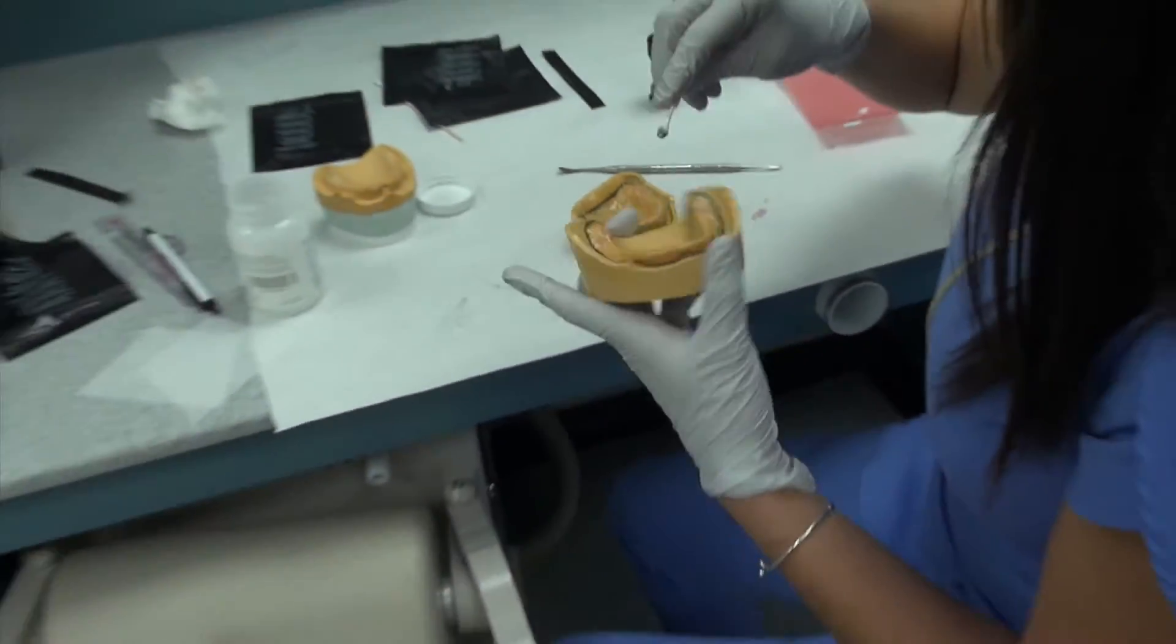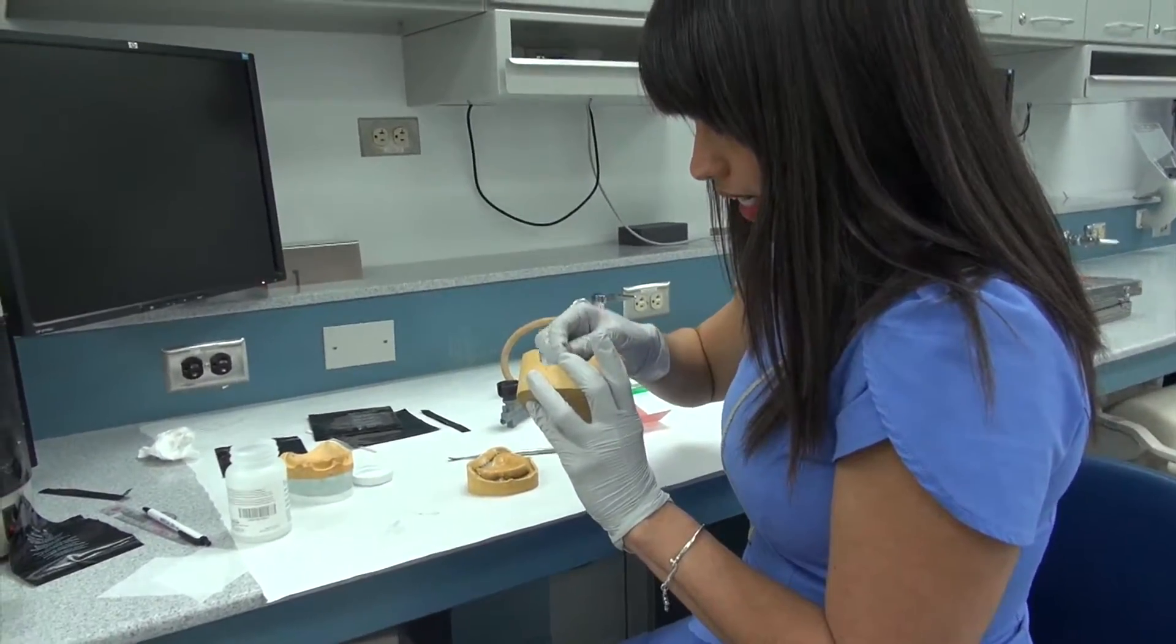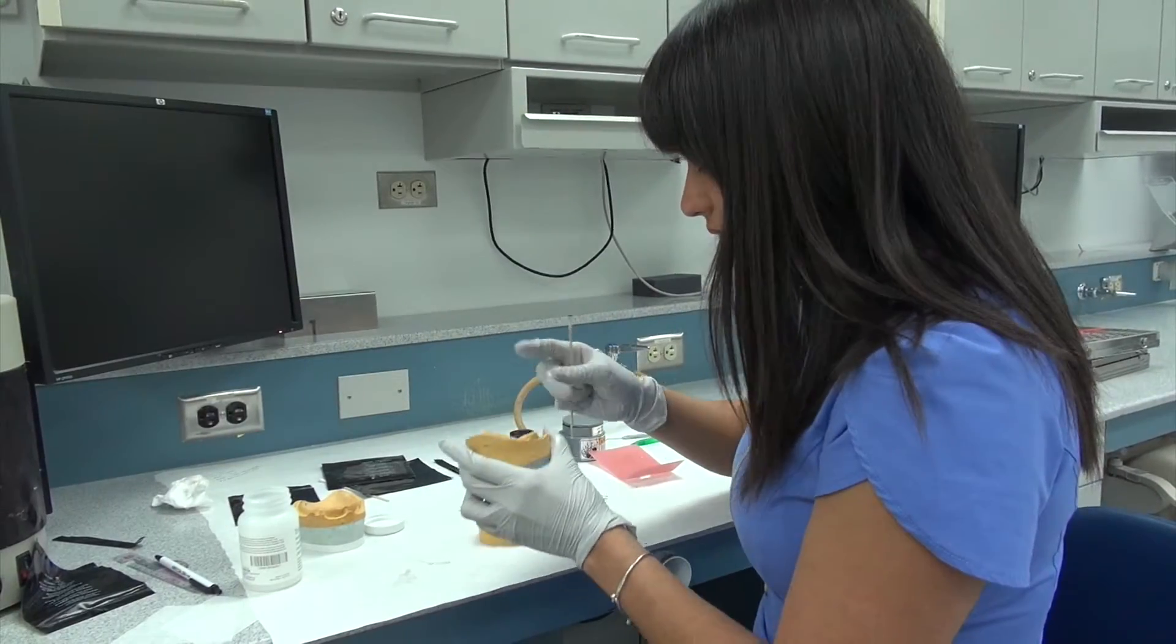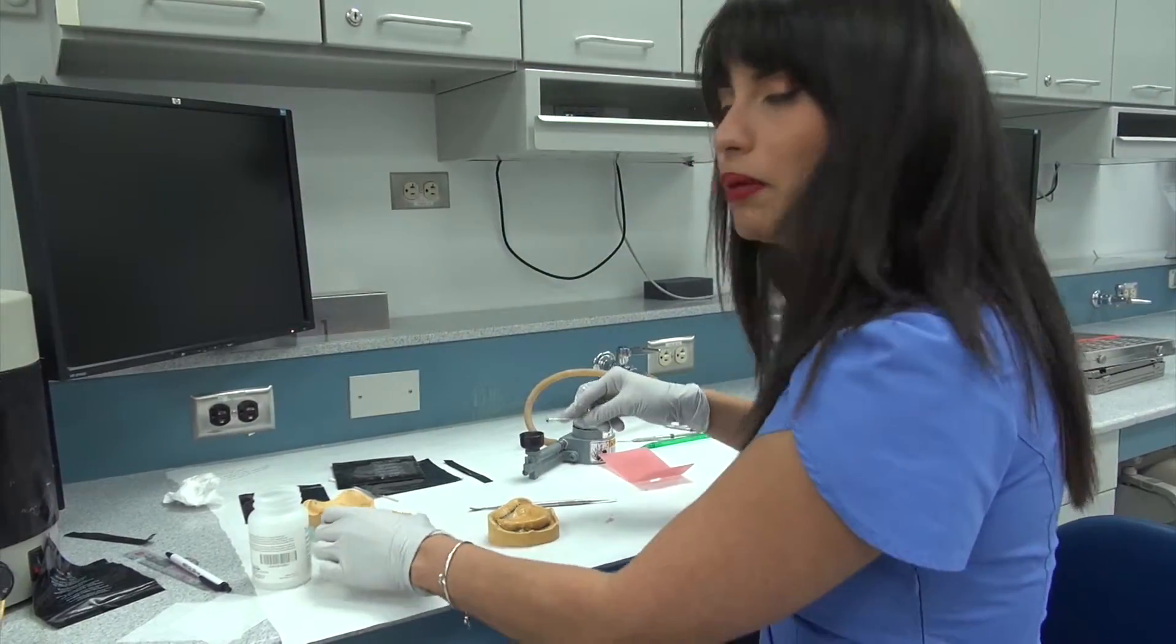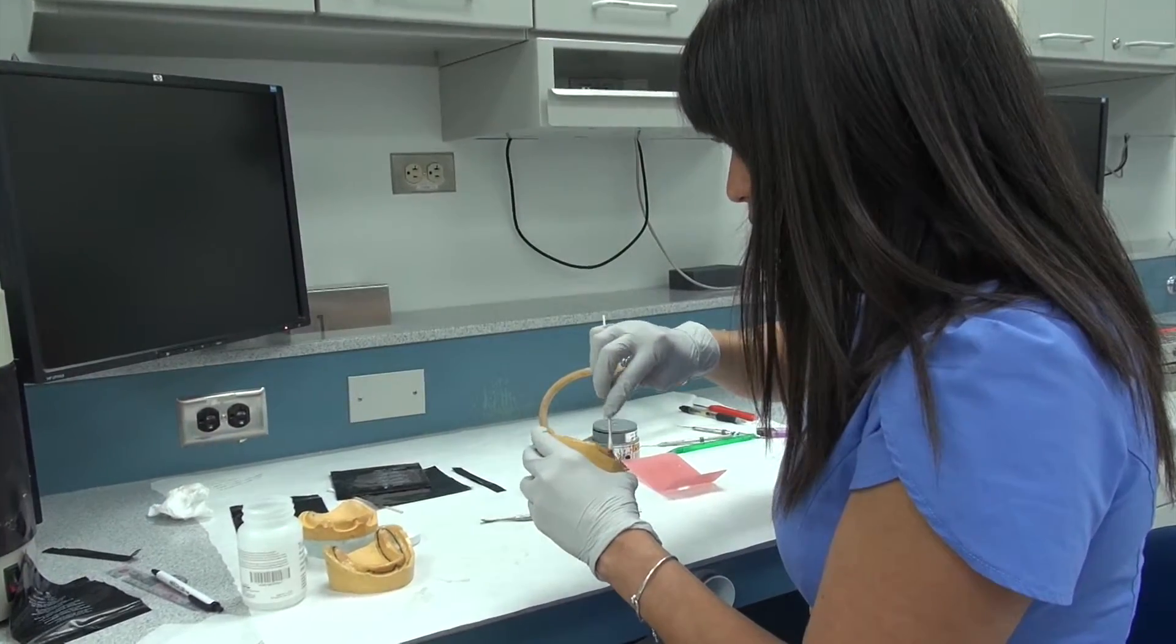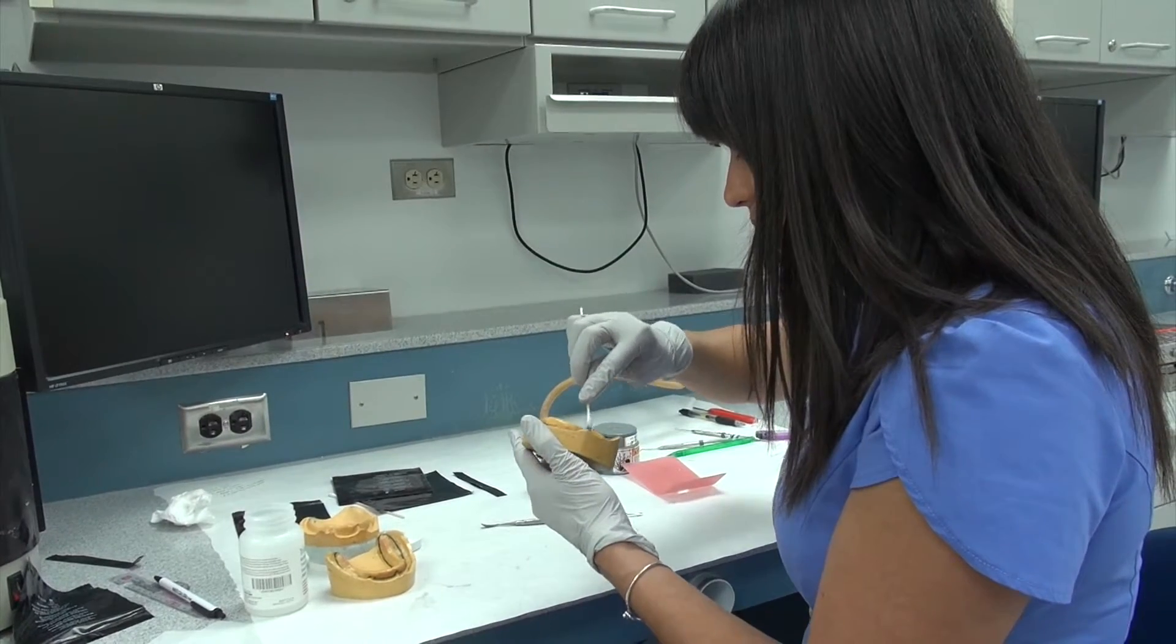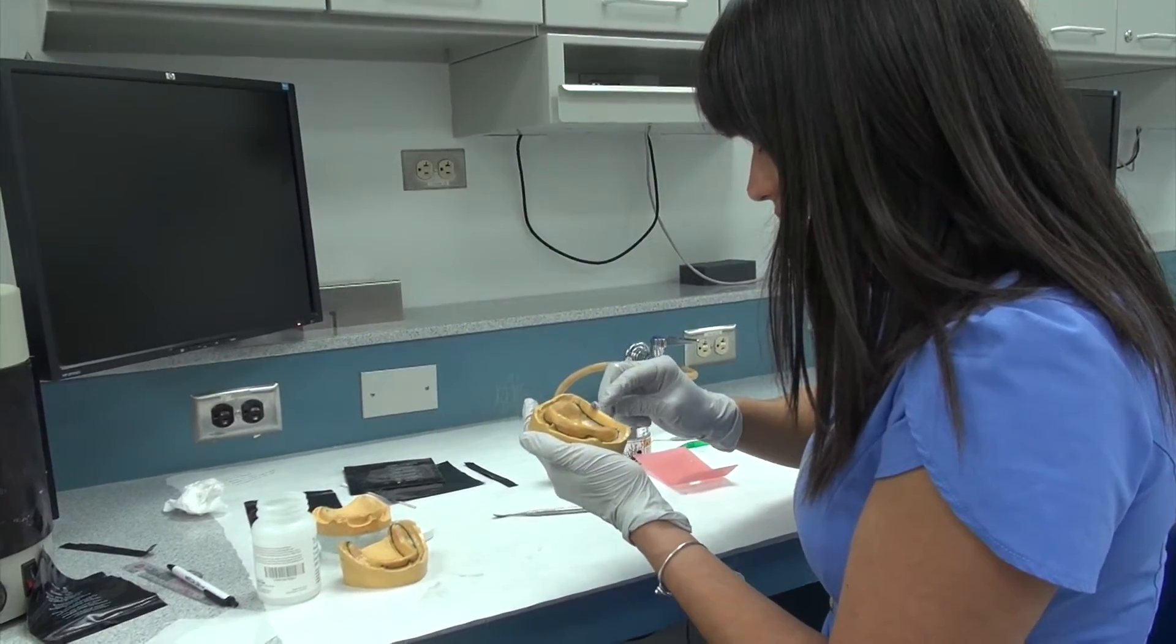So you want it to be nice and slick, but keep in mind any extreme excess is just going to kind of cause bubbling, so that's why you want to get rid of it. Once we've done that, the next step will be to apply the triad material.